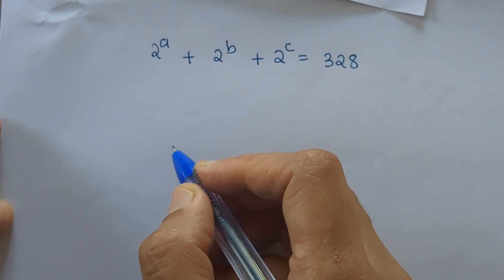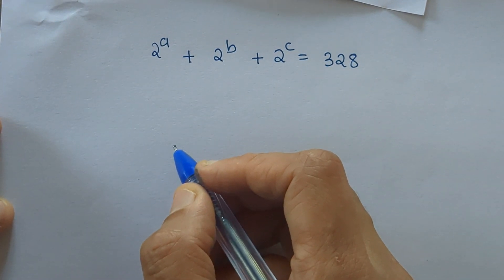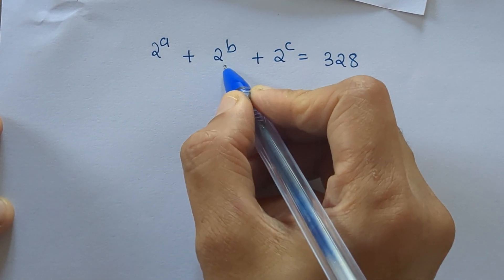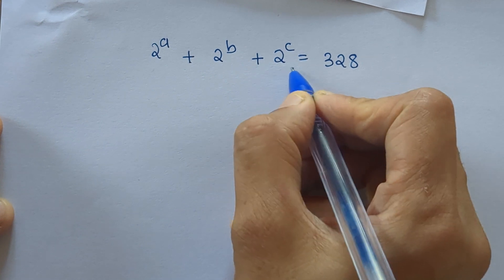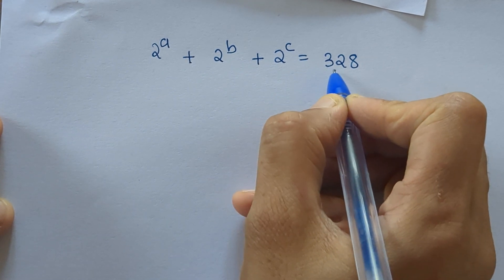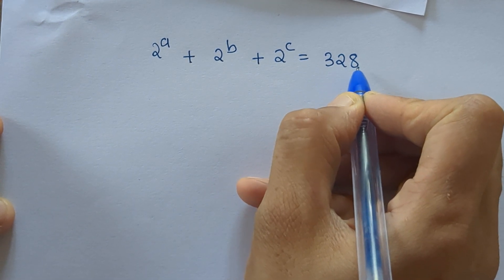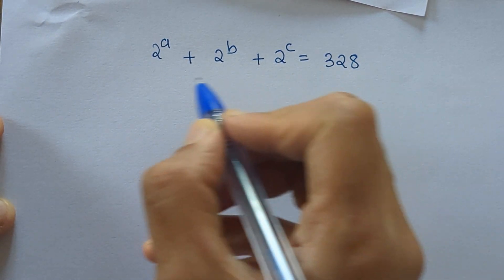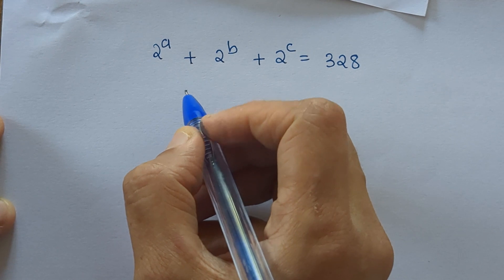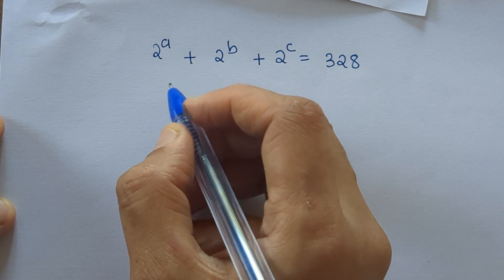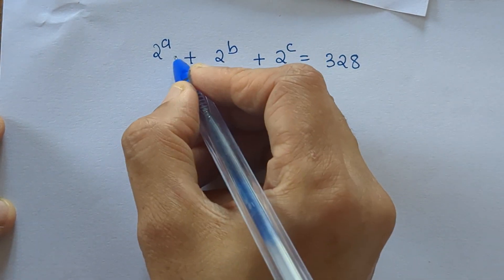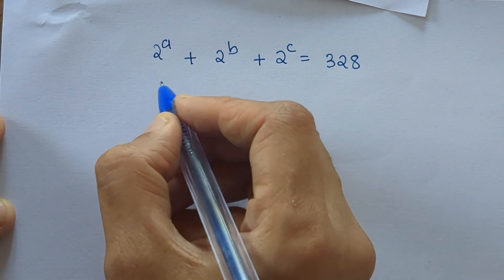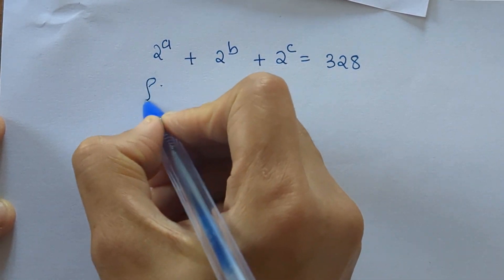Hello everyone. Our question is 2 raised to A plus 2 raised to B plus 2 raised to C equal to 328. So how can we solve this? We have to find A, B, and C. So let's solve.